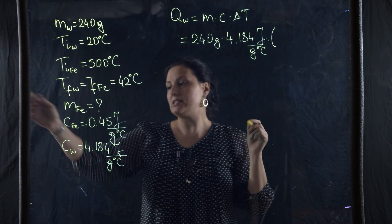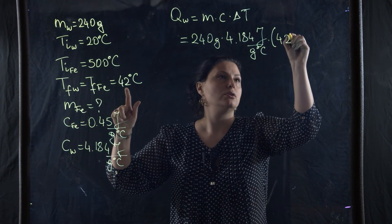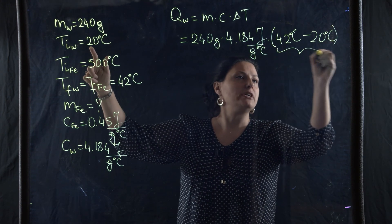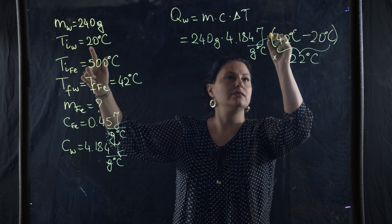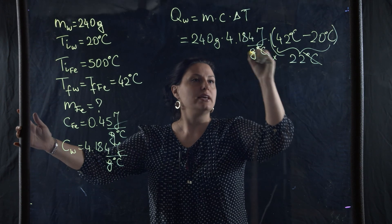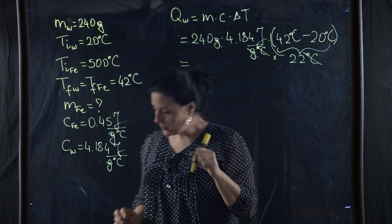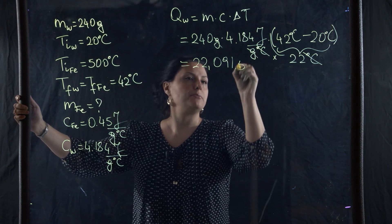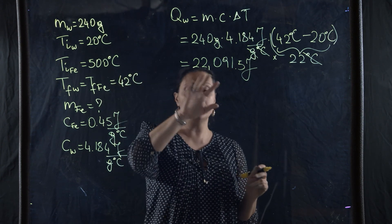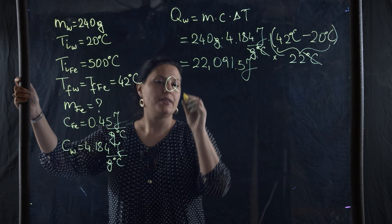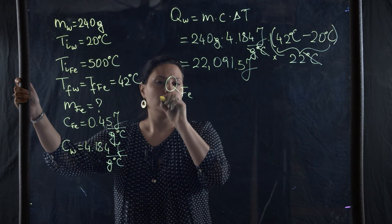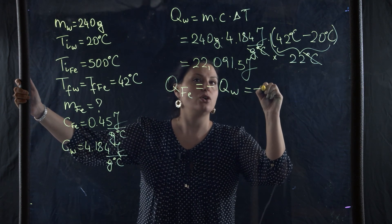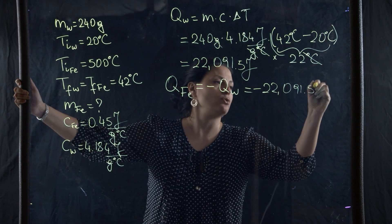Delta T is final minus initial: 42 minus 20 degrees Celsius gives 22 degrees Celsius. This gives Q_water = 22,091.5 joules — that's the amount of heat the water gained. We assume that is all the heat the iron lost, so Q_iron equals negative Q_water, which is minus 22,091.5 joules.